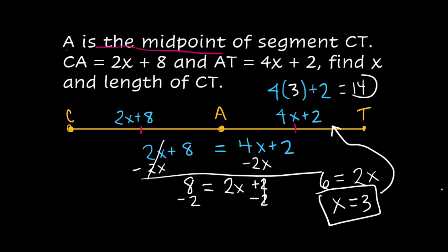That's this side, not the whole thing, but just half of it is 14. So that means the other side has to be 14 too. The entire length of C to T has to be 14 plus 14, which is 28.